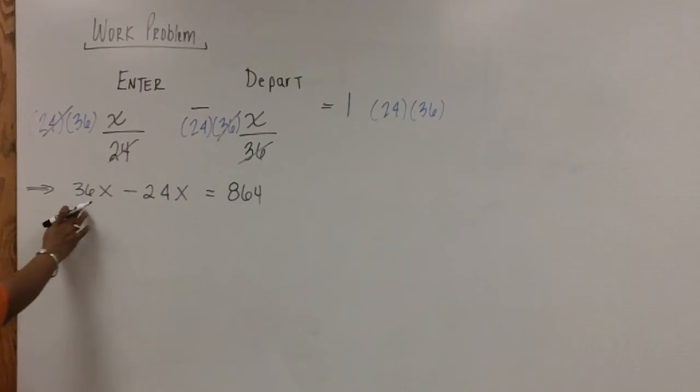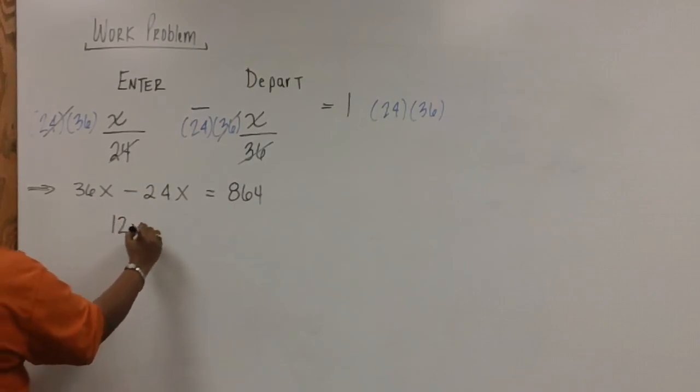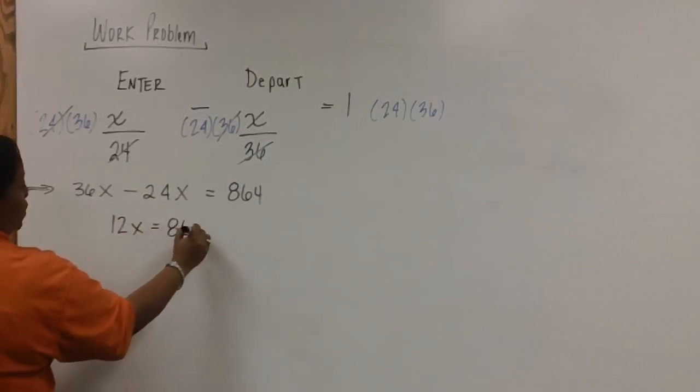Combining like terms on the left, we have 36x minus 24x, which is 12x, equal to 864.